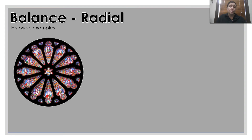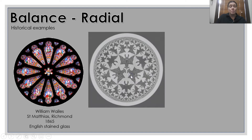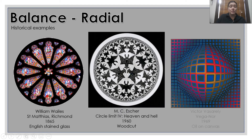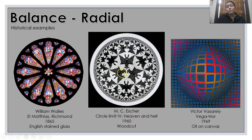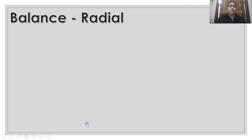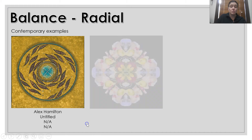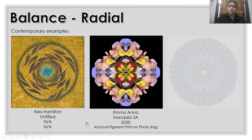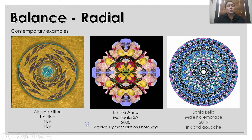Some examples of radial balance. We've got the stained glass windows, we've got Escher, and we've also got the Victor Vasarely work with optical art. All of them are radiating from the centre. Some contemporary examples — very similar to a mandala, but all radiating from that central point.